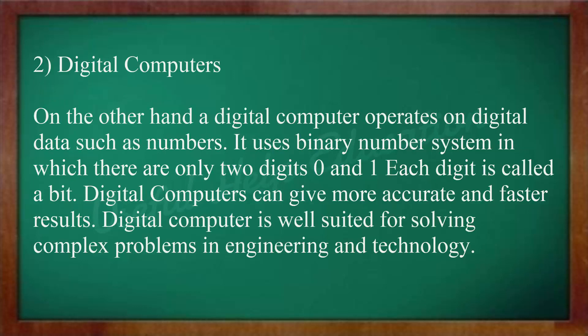Digital Computers: A digital computer operates on digital data such as numbers. It uses the binary number system in which there are only two digits, zero and one. Each digit is called a bit. Digital computers can give more accurate and faster results.